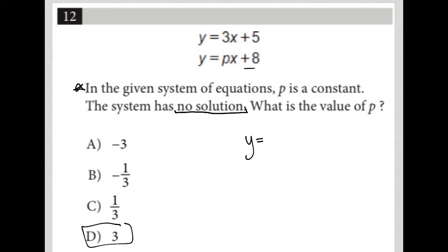The first equation would say Y equals three X plus five. The second equation would say Y equals three X plus eight. And then again, I'm going to multiply the entire bottom equation by negative one, making that a negative, making this a negative, making this a negative.